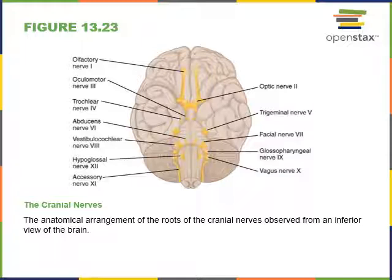Cranial nerve ten, the vagus nerve, has both sensory and motor functions. Sensory information comes from visceral organs, including a baroreceptor measuring blood pressure in the aorta. Motor pathways carry parasympathetic efferent fibers that decrease heart rate and stimulate the digestive organs. The vagus nerve attaches to the brain at the medulla, with peripheral attachments in the visceral organs.